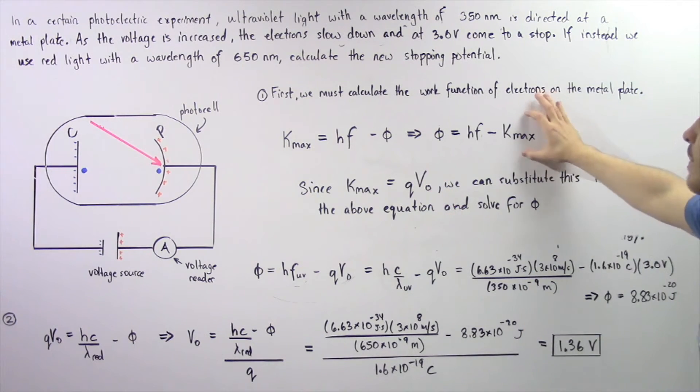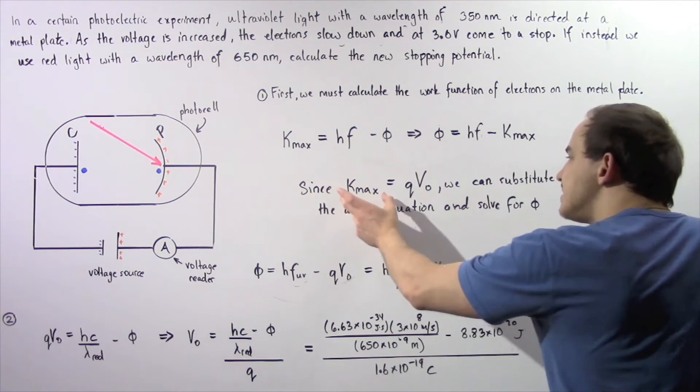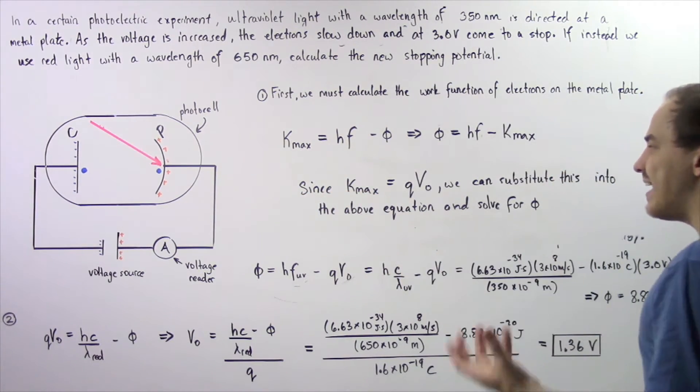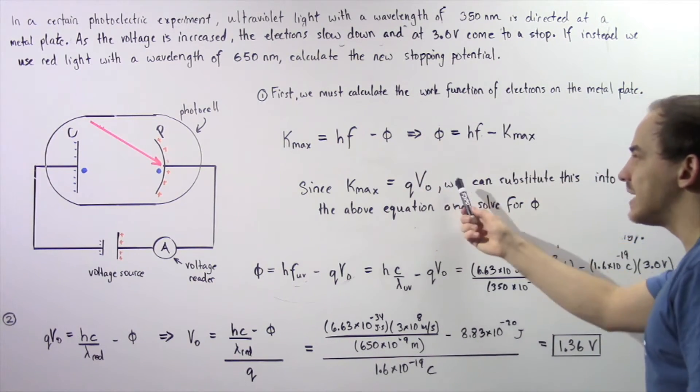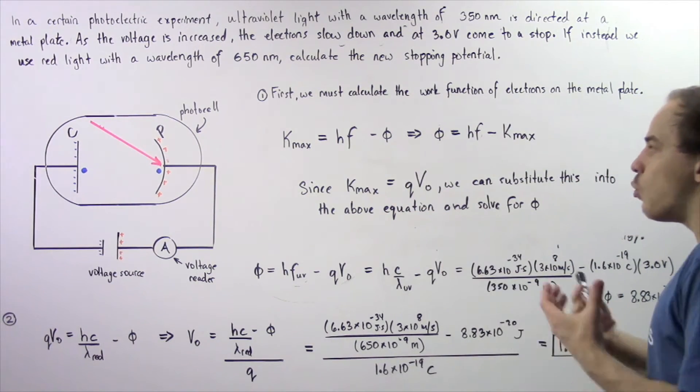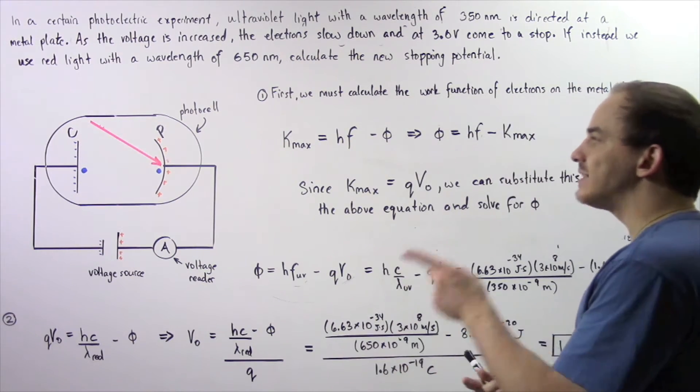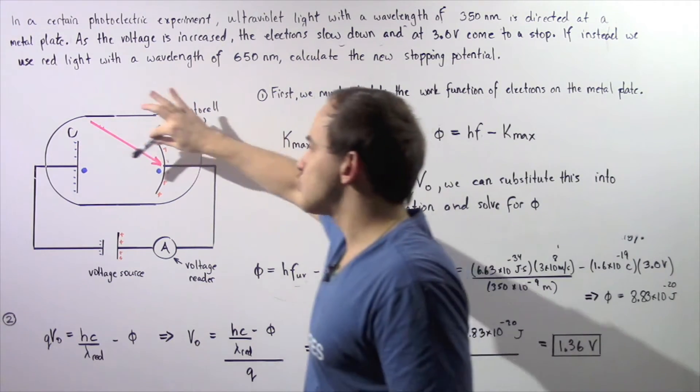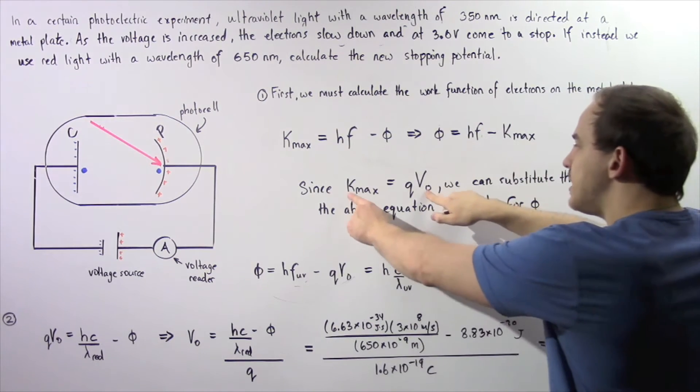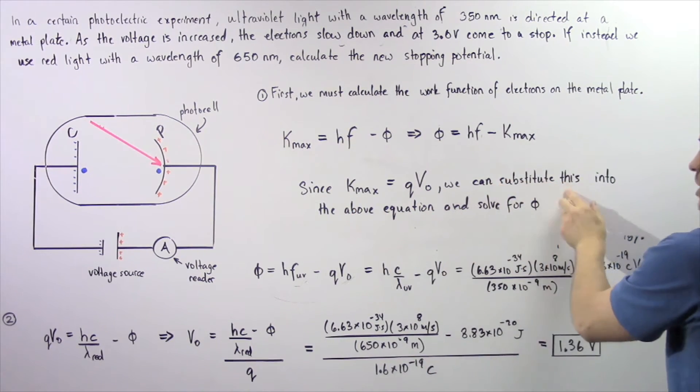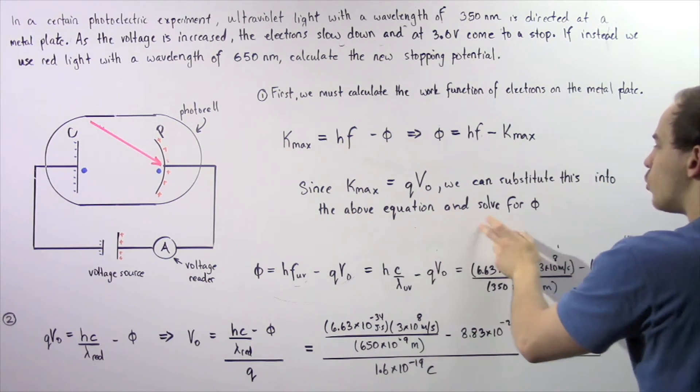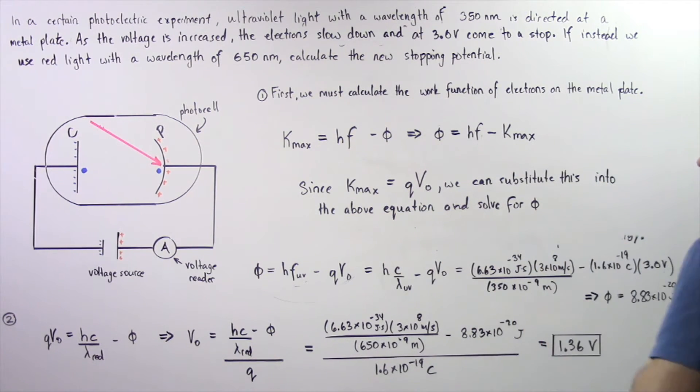Now, because the maximum kinetic energy is equal to Q multiplied by V naught, which is simply the quantity of electric potential energy that the electron gains as it travels across, since these two quantities are equal, we can substitute this into the above equation and solve for phi.